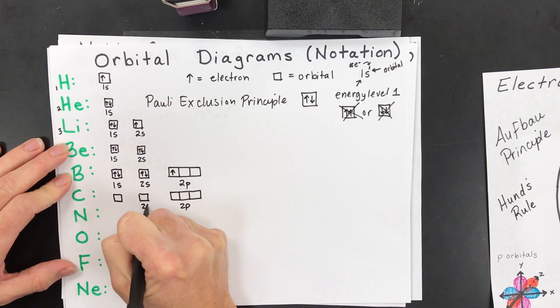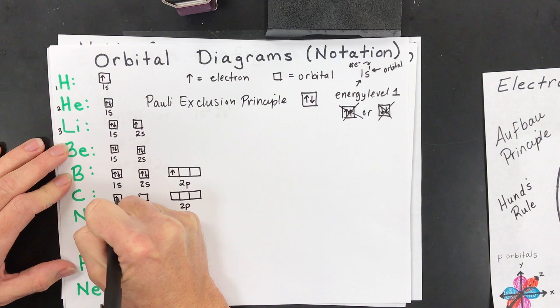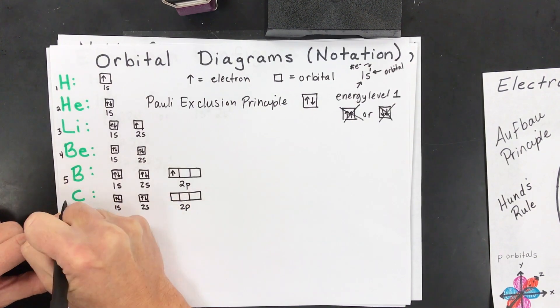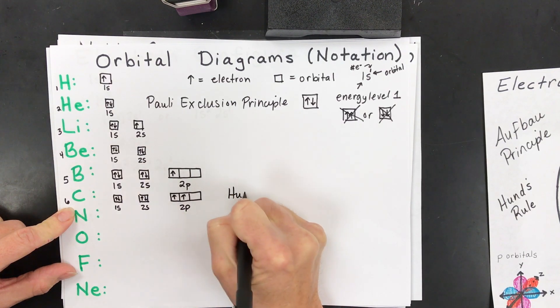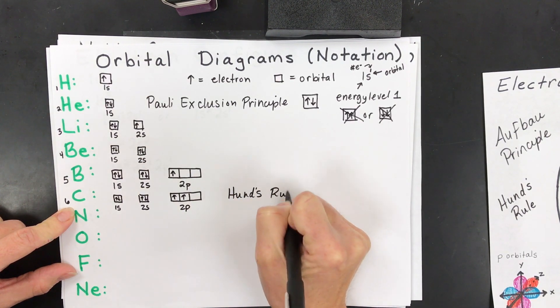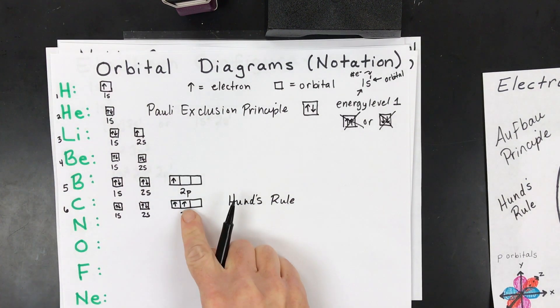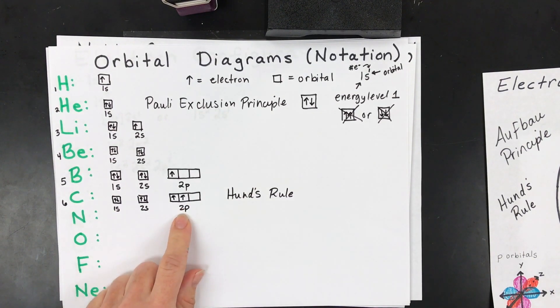And this is something called Hund's rule in that when you have these equal energy p orbitals, which are called a sublevel, the electrons will fill one at a time first. So in this picture, carbon will look like this. It'll have a box, a box, and again, three boxes possible. And those are the 2p, the 2s, and the 1s. So you'll have 1, 2, 3, 4, and again, we're trying to get to 6, 5, and 6. And this, again, is something called Hund's rule. It's that you unpair before you pair at that energy level and the equal sublevel.